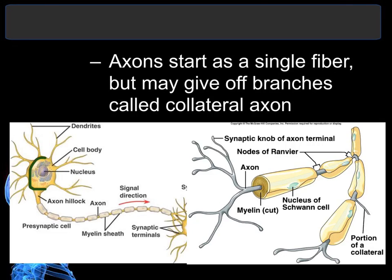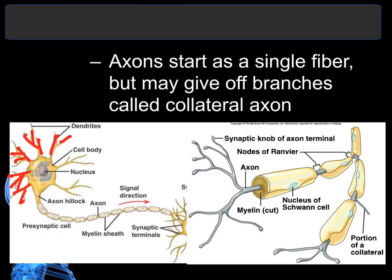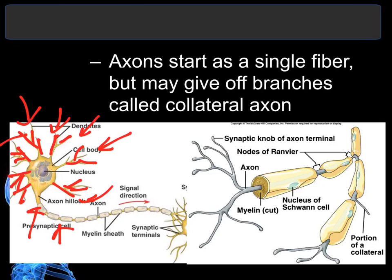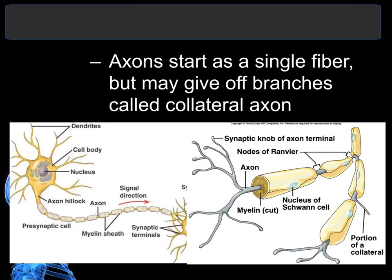Here in the picture is your cell body, which contains the nucleus and other organelles. Then off the cell body are the dendrites, which are the highly branched structures that receive information from other neurons or other areas. Once the cell body receives the information from the dendrites, it sends the information down the axon to other neurons.